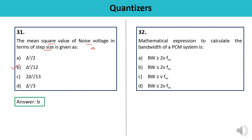Question 32 (last): The mathematical expression to calculate the bandwidth of a PCM system — the bandwidth must be greater than or equal to V times FM, where V is the number of bits and FM is the maximum signal frequency. The answer is C. Thank you so much for watching this video.